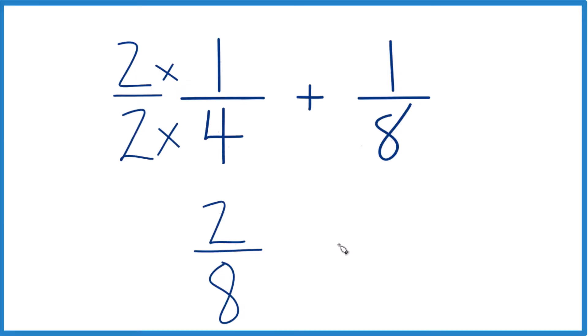We have our 2 eighths here, plus our 1 eighth here, and now we have the same denominator. We just add the numerators.